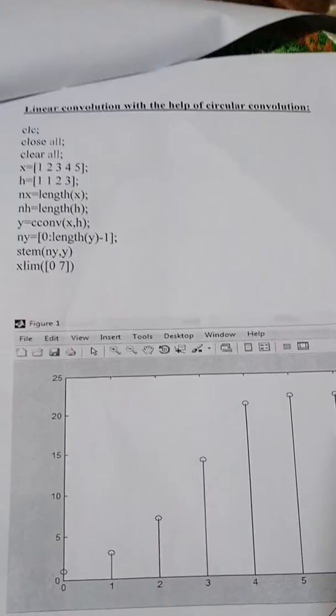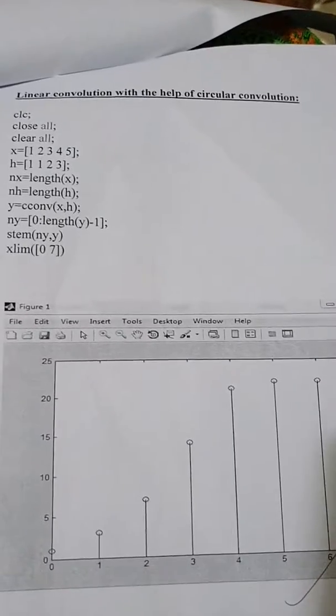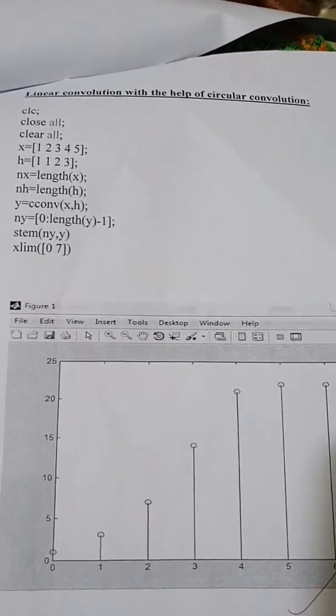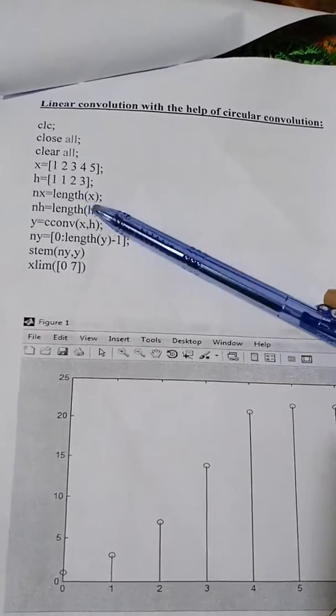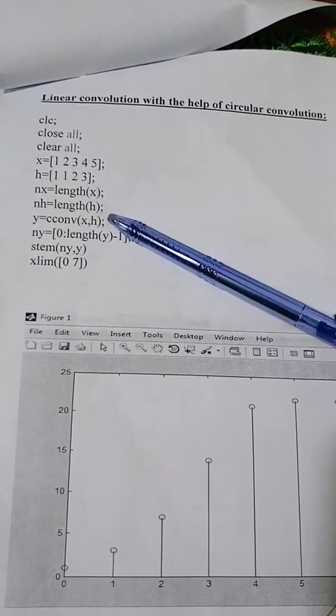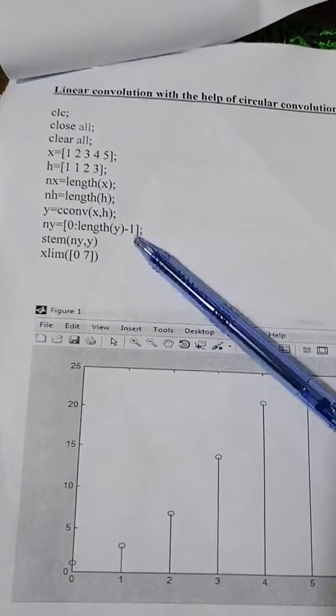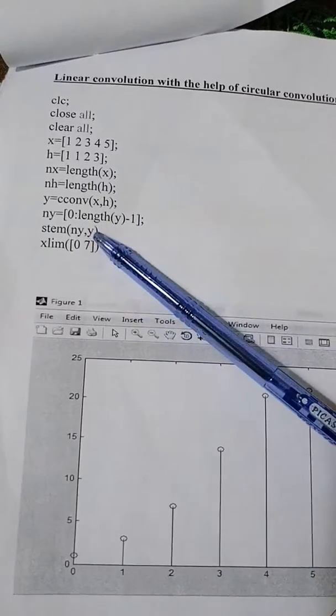This is the coding to obtain circular convolution with the help of linear convolution. We have two signals and their lengths, and then we have convolved them. Our ny will be from 0 to length y minus 1, and we have used stem.